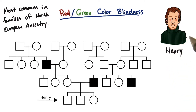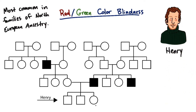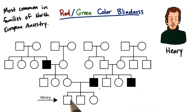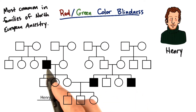Meet Henry, and this is a pedigree of Henry's family. It shows that he has an affected father, an affected paternal uncle — his father's brother — and an affected maternal grandfather, his mother's father.